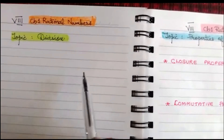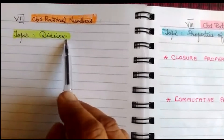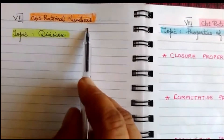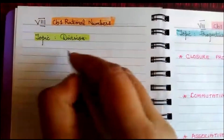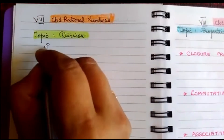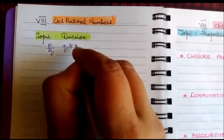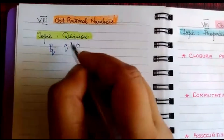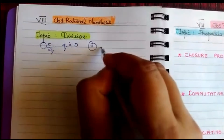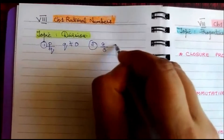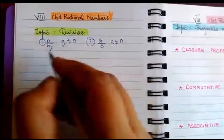Students, today you will learn the last operation of rational numbers, that is division. A rational number is of the form p by q, where q is not equal to 0. Let the first rational number be p/q and the second rational number be r/s, where s is not equal to 0.